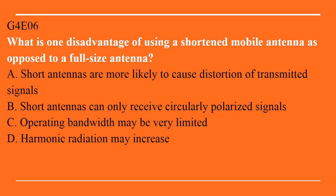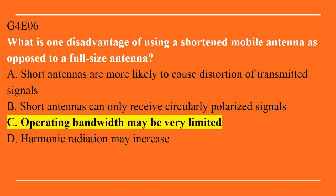G4E06: What is one disadvantage of using a shortened mobile antenna as opposed to a full-size antenna? A. Short antennas are more likely to cause distortion of transmitted signals. B. Short antennas can only receive circularly polarized signals. C. Operating bandwidth may be very limited. Or D. Harmonic radiation may increase. Answer is C. Operating bandwidth may be very limited.